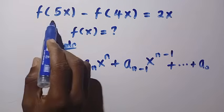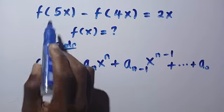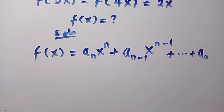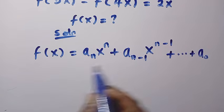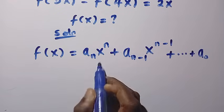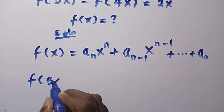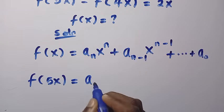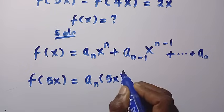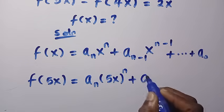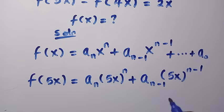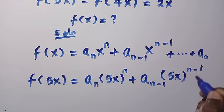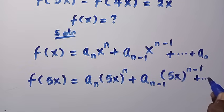For f(5x), the domain becomes 5x — wherever we have x, we replace it with 5x. So f(5x) equals a_n (5x)^n plus a_{n-1} (5x)^{n-1} plus a_{n-2} (5x)^{n-2}, continuing until we reach a_0.